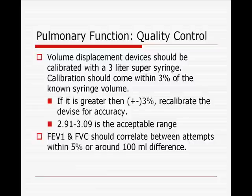The two FVC maneuvers should be reproducible within a 5% range. For example, if you had an FVC of 4 liters, your second FVC maneuver should be around 3.9 liters — very close to the 4 liters. You should not have 4 liters on the first attempt and 2 liters on the second, because then you wouldn't know which one to rely on. You must have two reproducible maneuvers within a 100 milliliter difference.